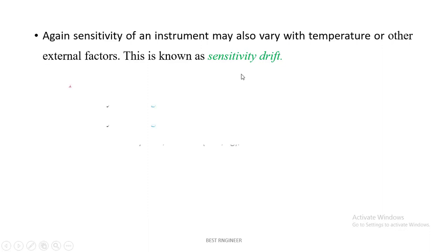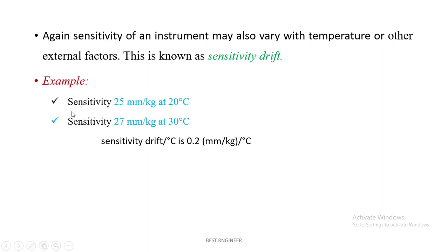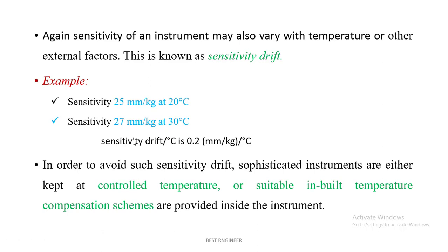This variation is called sensitivity drift. For example, the sensitivity of a spring balance is 25 mm per kilogram at 20°C, and 27 mm per kilogram at 30°C. There is a difference of 2 mm for a 10°C change, so the sensitivity drift is 0.2 mm per kilogram per degree Celsius. In order to avoid such sensitivity drift, sophisticated instruments are either kept at controlled temperature or suitable built-in temperature compensation schemes are used. Sensitivity is how the output varies with respect to the input.